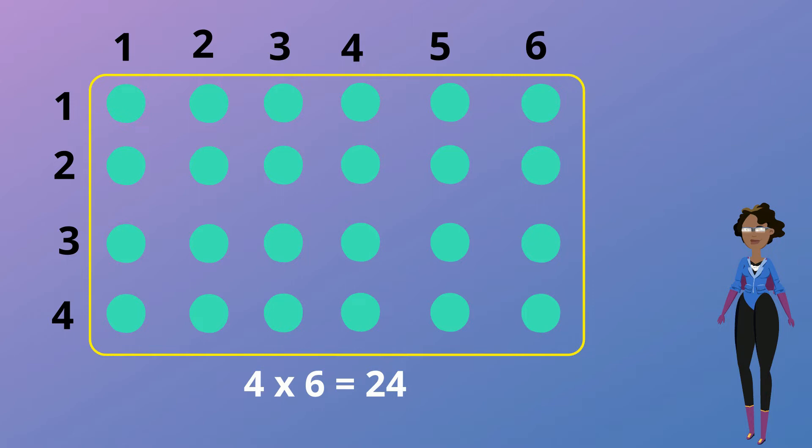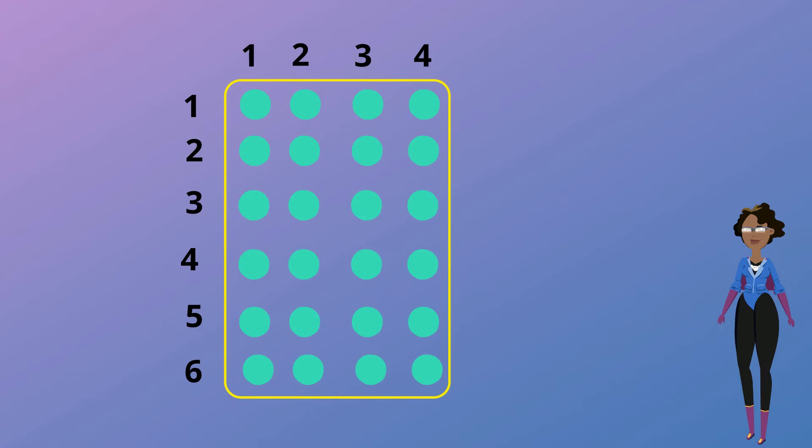Look at this array. This one has 6 rows of 4 which gives us the multiplication sentence of 6 multiplied by 4 which also equals 24.